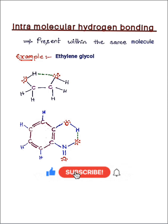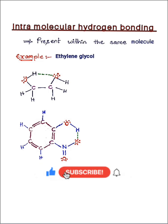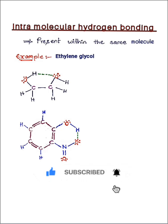To summarize: intramolecular hydrogen bonding occurs within the same molecule itself, whereas intermolecular hydrogen bonding is present between different molecules of the same substance. Hope you understood this lecture. If you have any doubts, comment below, and for more videos, subscribe to our channel. Thank you for watching.